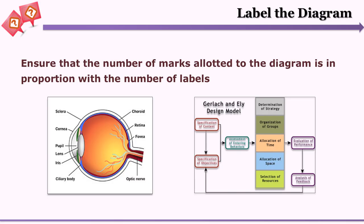The next type of objective question is label the diagram, which we are quite familiar with. While creating a label the diagram question, we need to ensure that the marks allocated are equal to the number of labels the learner would be giving. This finishes our discussion of objective type questions.